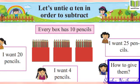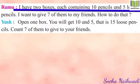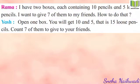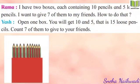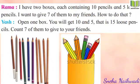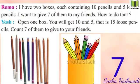Now the last one. Rama has two boxes, each containing 10 pencils, and five loose pencils. She wants to give seven of them to her friend. The answer is: open one box and you will get 10 loose pencils. Together with the five loose pencils, that gives 15 loose pencils. Count out 7 pencils and give them to your friend.